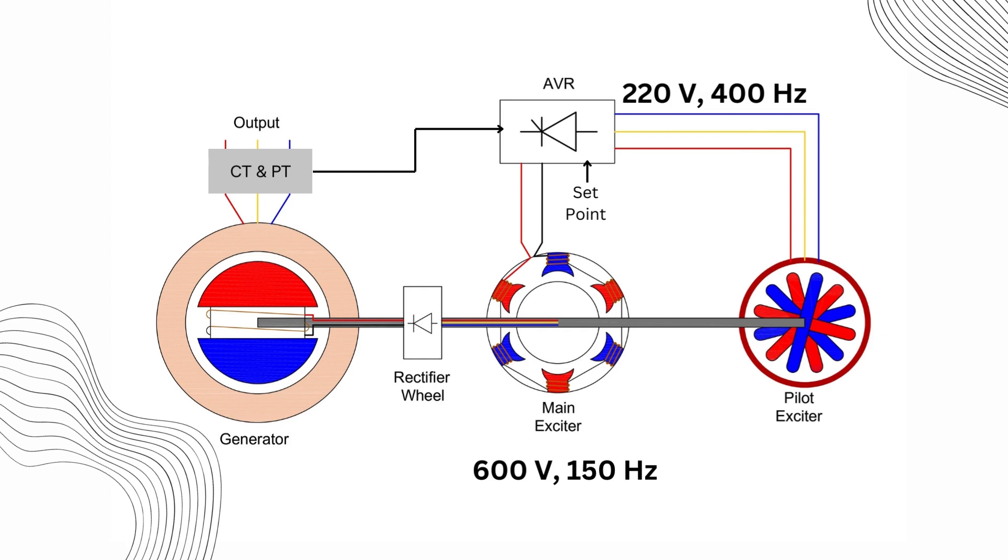Now measuring the rotor current directly isn't possible due to its location inside the rotating shaft. However, we can't just ignore this crucial measurement. To solve this, we use a quadrature axis coil mounted on the yoke of the main exciter. This coil indirectly measures the rotor current by inducing a proportionate voltage from the AC current flowing in the armature, allowing us to determine the rotor current.